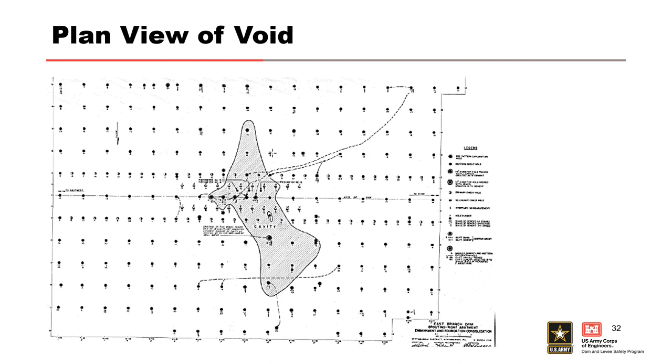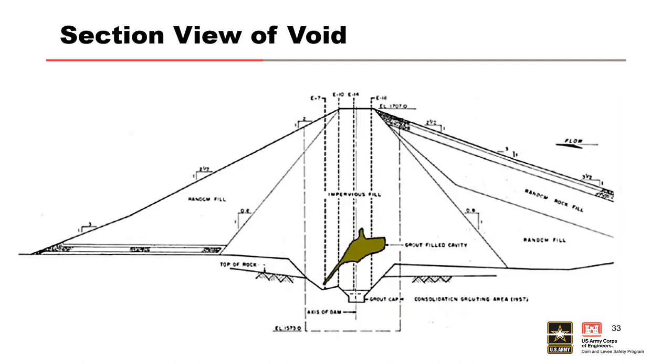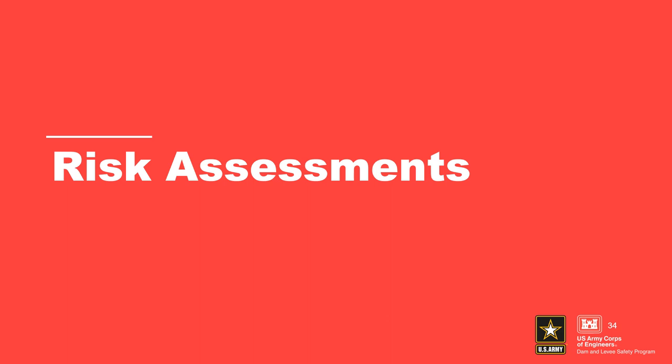A plan view and section view show the shape of the void in the embankment. The volume of the void was estimated to be equal to that of a school bus. There were many negative factors that contributed to the incident, including untreated flaws in the rock foundation, areas where adequate compaction was likely difficult to achieve, poor geometry leading to zones of low stress, differential settlement and cracking, and unfiltered exits into both the rock foundation and the rock drain. With all these issues at the same location, it is very fortunate that the dam did not fail.